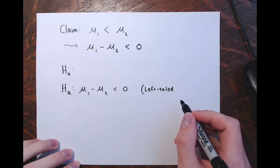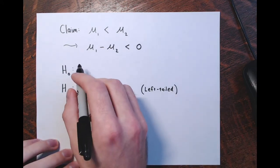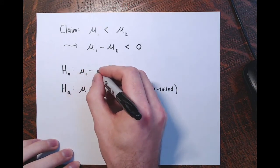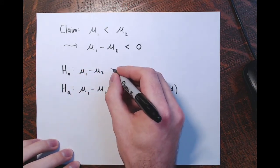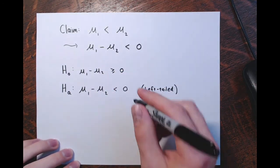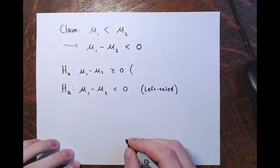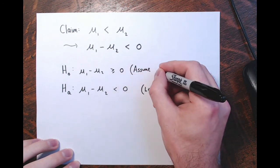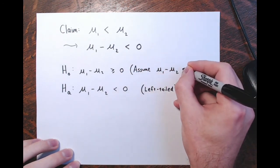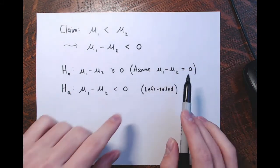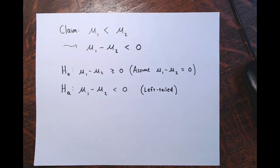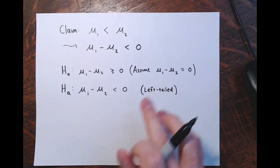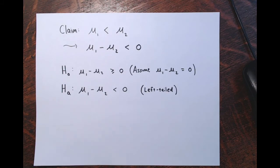The null hypothesis opposes the alternative: mu-1 minus mu-2 is greater than or equal to zero, but we typically write just the equal part — we assume mu-1 minus mu-2 equals zero. We assume the average braking distances for the Hawk and Wildcat are equal, that there is no difference. Based on the test statistic, we determine whether to reject this assumption.